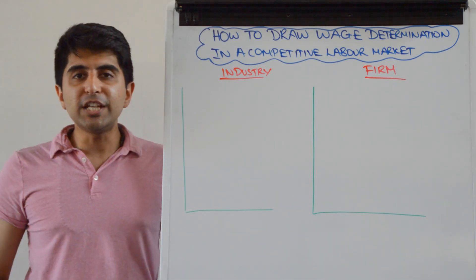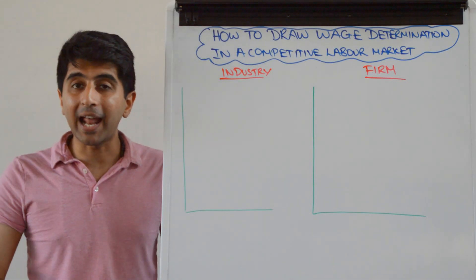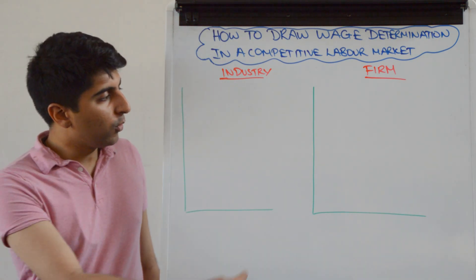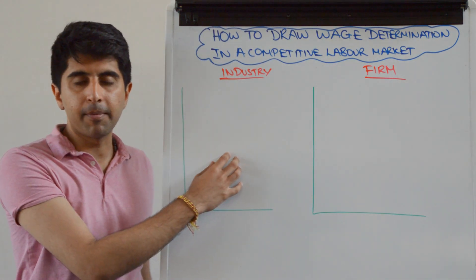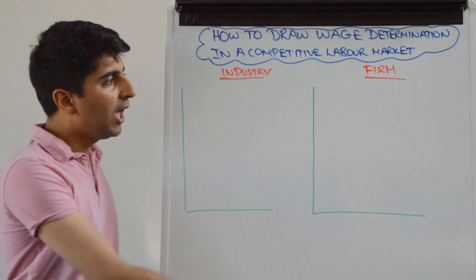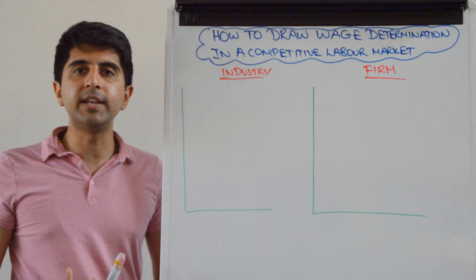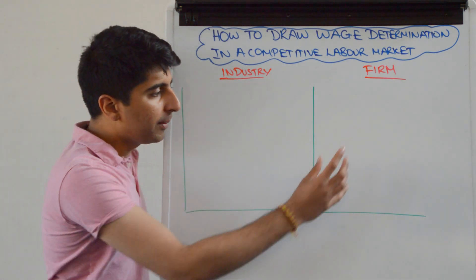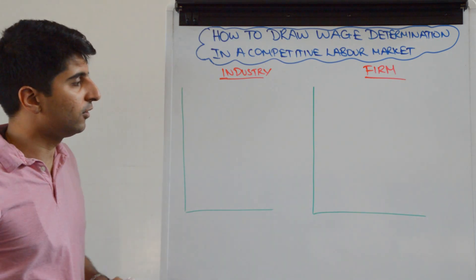Hi everybody. We want to show wage determination in a perfectly competitive labour market. How do you go about doing that using diagrams? Well, we need to draw two diagrams here. On the left, we show the industry labour market, i.e. the labour market for the entire profession. On the right, we draw the labour market for the individual firm who is operating under perfectly competitive labour market conditions.